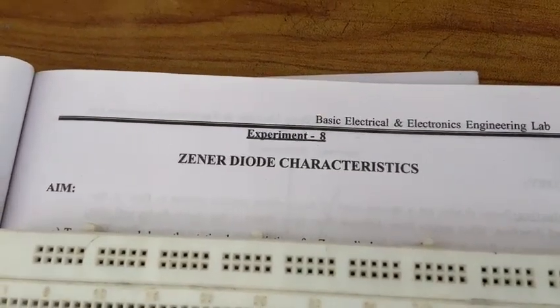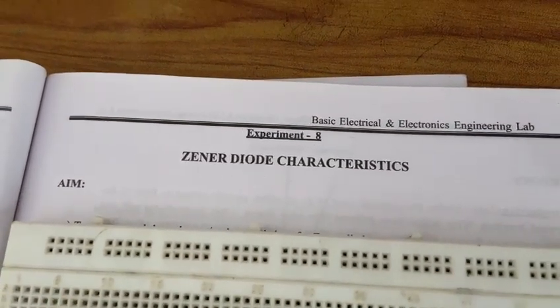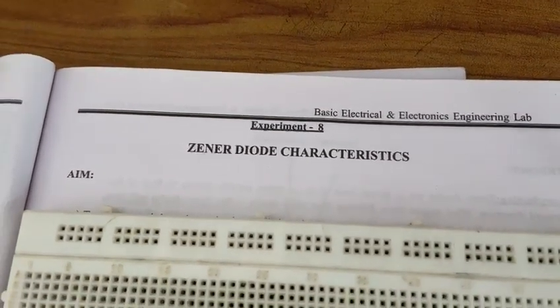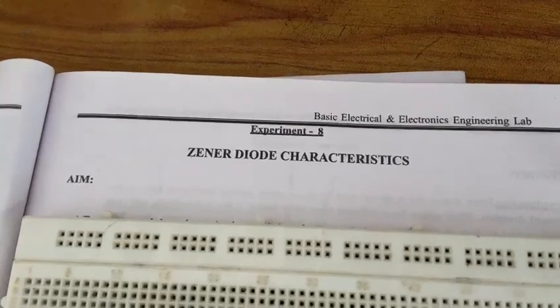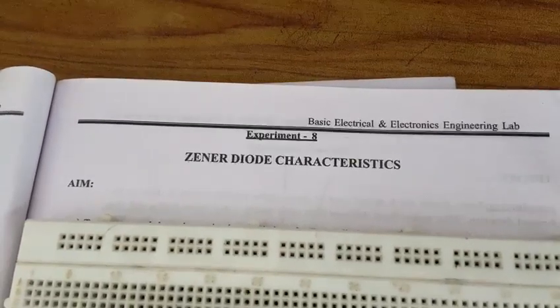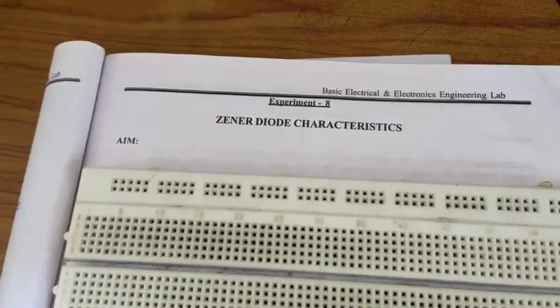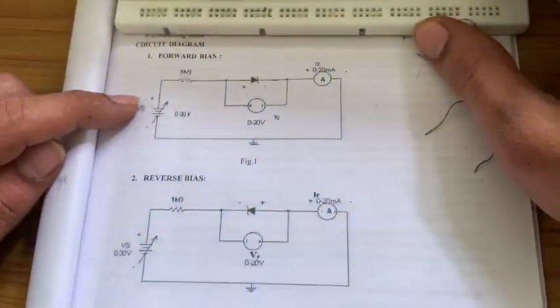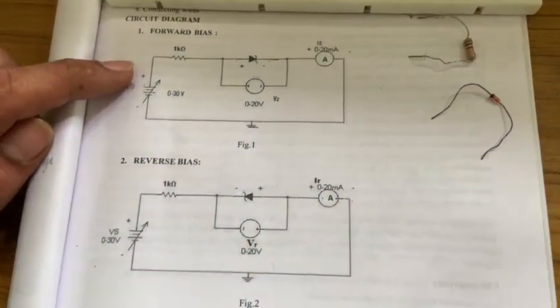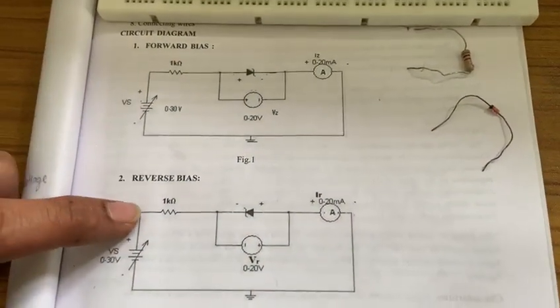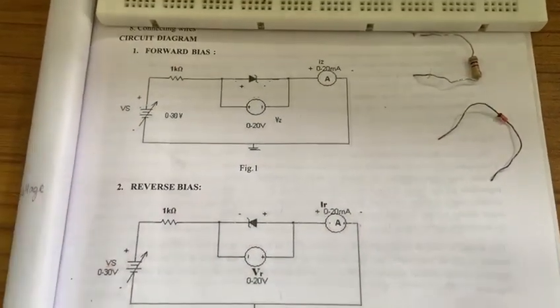Today we are going to discuss the G0 diode voltage-current characteristics as well as the regulation of the G0 diode. The circuit shown below illustrates the G0 diode forward bias as well as reverse bias diagram.